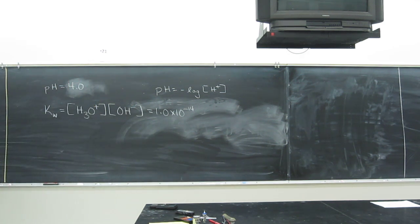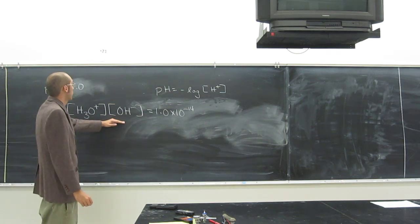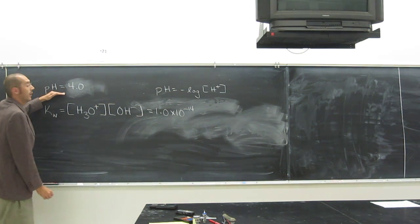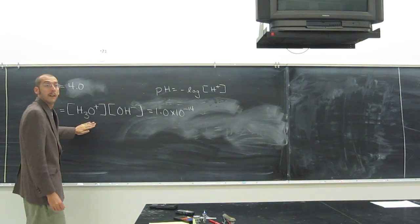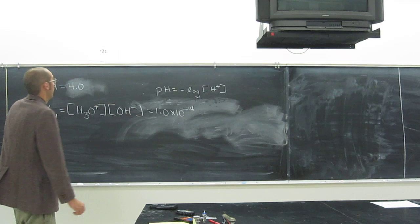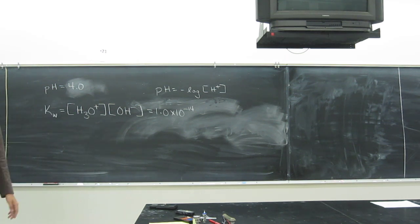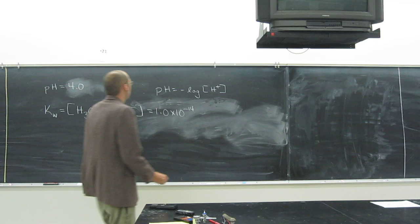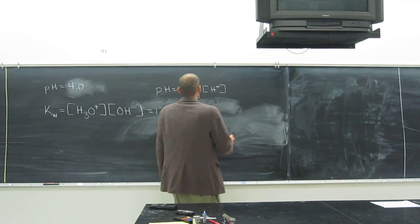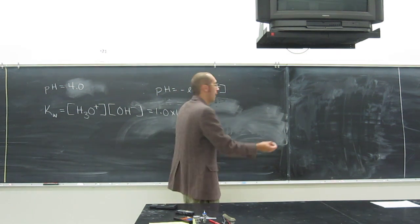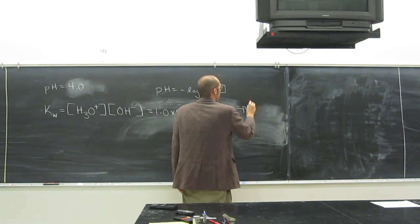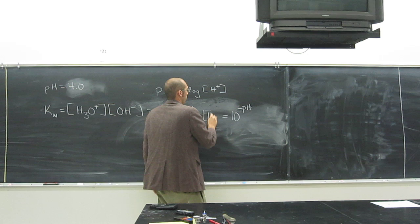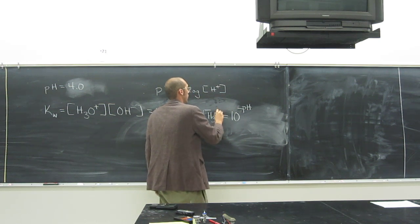So with that information, we should be able to rearrange this to, after figuring out this, being able to plug that number into here. So let's figure out what the hydrogen ion concentration is first. So how do we do that? Well, the same way we did it the last problem, right? So it's going to be 10 to the negative pH equals the H3O+ concentration.